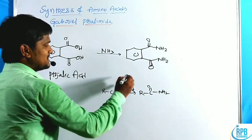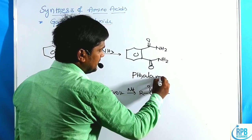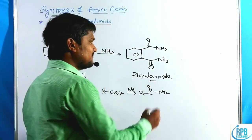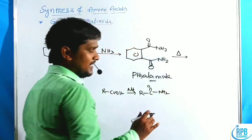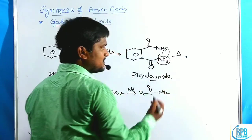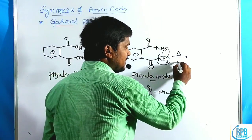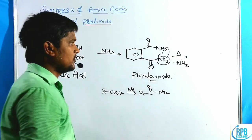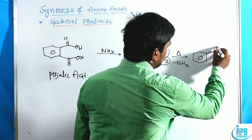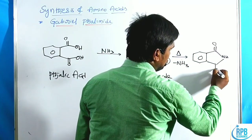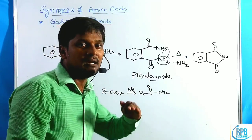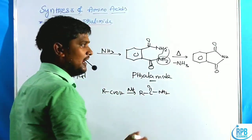From phthalamide, upon heating at higher temperature, one NH₂ group and one hydrogen from the other NH group are eliminated as ammonia. This yields phthalimide, which has the structure: benzene ring with two C=O groups connected to a single NH group.